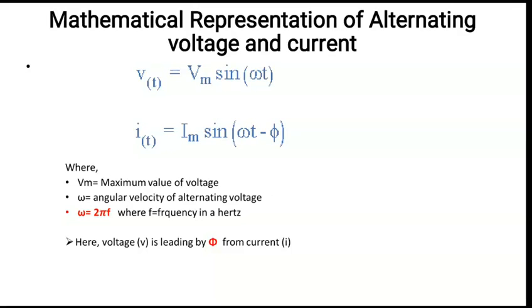Voltage V is leading by phi from current — remember who is leading and who is lagging. This is the mathematical representation of alternating voltage and current. If asked in an exam, write these two equations. Note that phi is optional — you can write i = Im sin(ωt) without phi. Phi is included just to show that voltage is leading and current is lagging. If you put minus phi on voltage and remove it from current, then current would be leading instead.